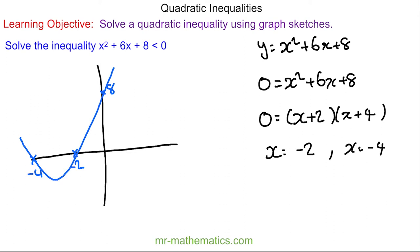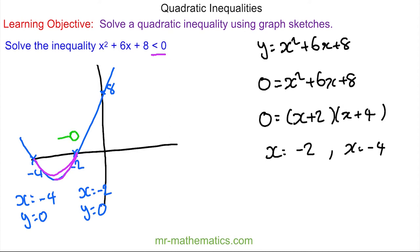We've been asked to find the solution for points which are less than zero, which are here below the x-axis. We know that when x is equal to negative four, y is equal to zero, and when x is equal to negative two, y is the same. So our solution is all points less than negative two but greater than negative four, which we can write as: x is less than negative two but greater than negative four.